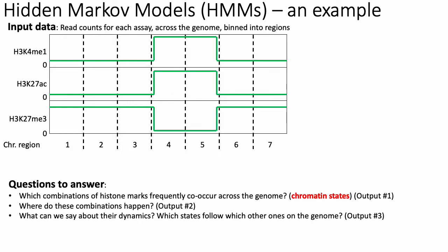The second thing an HMM tells you is, given that it learns these frequently co-occurring combinations of histone marks, where do these combinations happen? Across the different chromosome regions, HMMs try to tell you for each region which chromatin state or combination of histone marks it looks like the most — that's output number two. Finally, it also tries to tell you what is the likelihood that the next state over is of type A, B, or C, giving you some idea of which combinations of histone marks tend to follow other combinations — that's output number three.